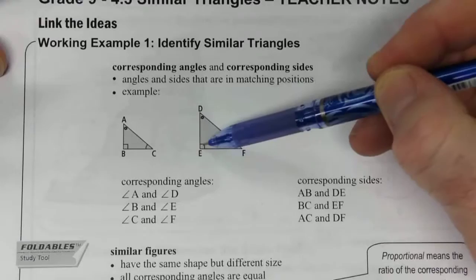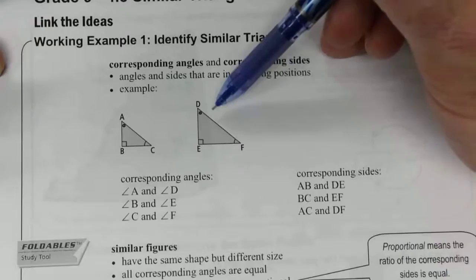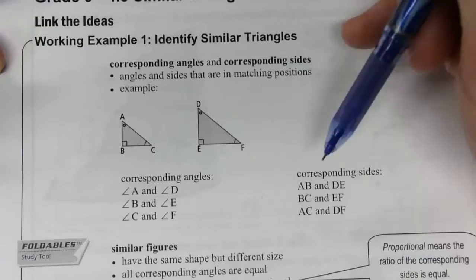AC, which in this case is the hypotenuse, is corresponding to DF. And then BC corresponds to EF. So those are called corresponding sides.